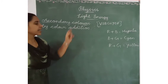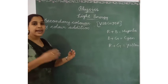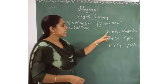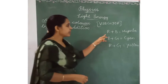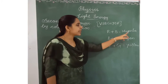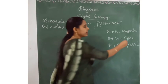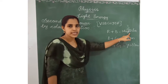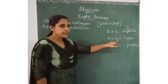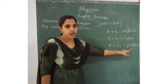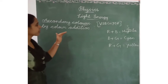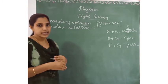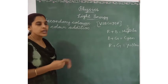Next is secondary colors. Secondary colors are obtained by mixing two primary colors. When we mix red and blue, we get magenta. When we mix blue and green, we get cyan. When we mix red and green, we get yellow. These are the secondary colors — formed by mixing any two primary colors together.